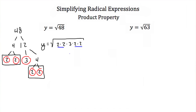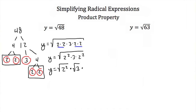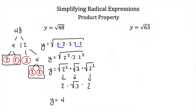We can group these pairs of 2's together, so we can think of this as y is equal to the square root of 2 squared times 3 times 2 squared. That means we can write it as the square root of 2 squared times the square root of 3 times the square root of 2 squared. The square root of 2 squared is just 2, the square root of 3 stays as the square root of 3, and the other square root of 2 squared is also 2. So we have 2 times the square root of 3 times 2, or y equals 4 square roots of 3.